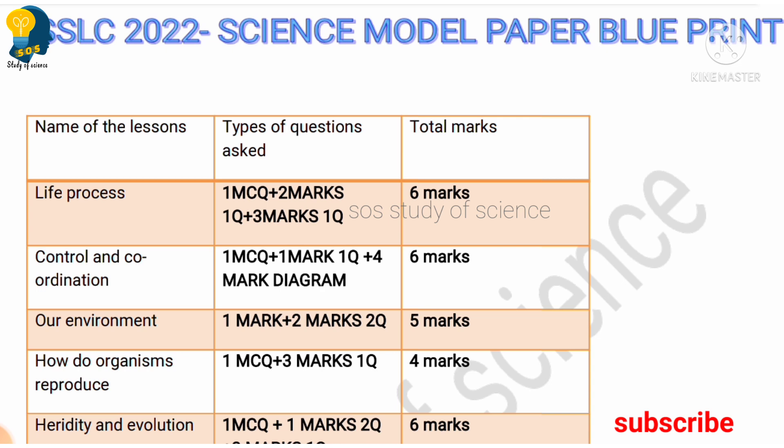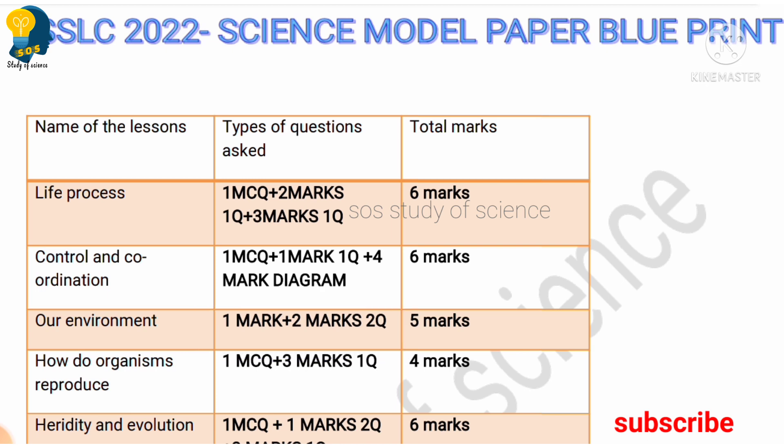Moving to the next lesson, Our Environment — the weightage is slightly more. I thought they may allot three to four marks according to old question papers, but for Our Environment the weightage is more in this year's model question paper. They have allotted five marks for Our Environment, which includes one one-mark question and two two-mark questions — so totally five marks.